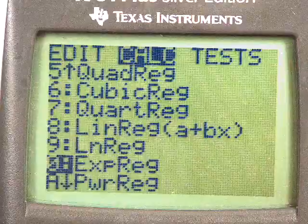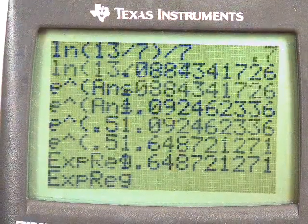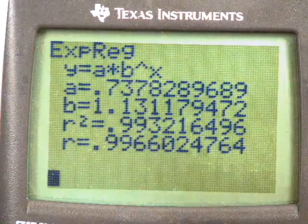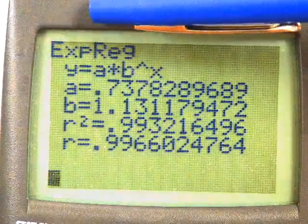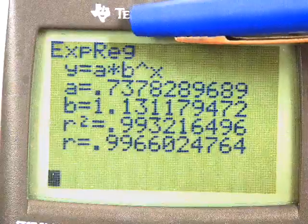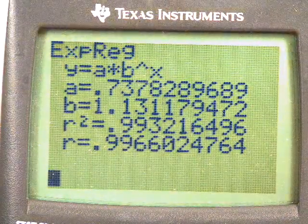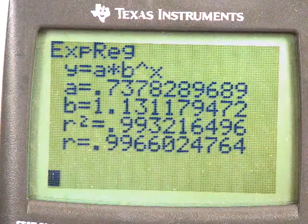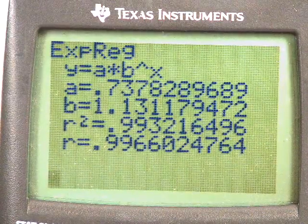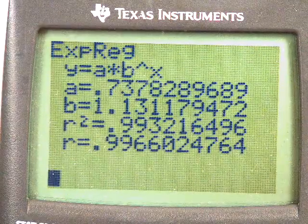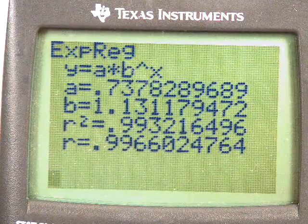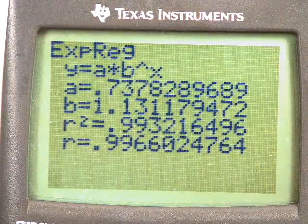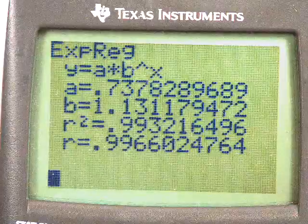And now we're still working with statistics, stat, calc. Exponential regression. And so how do you know that we've found what we want? Look at my form. It's y equals a times b to the x. So that's exactly what we want. My a starts at .737. My b is 1.13. Yeah, and it's going to double, but it's doubling about every six days.